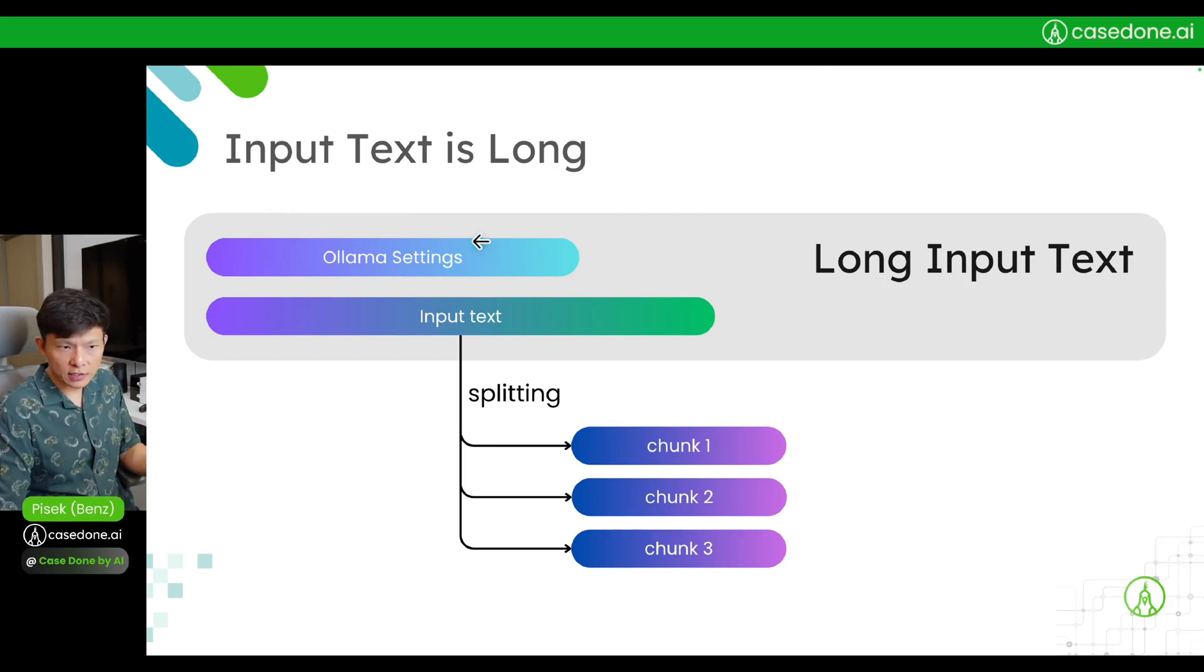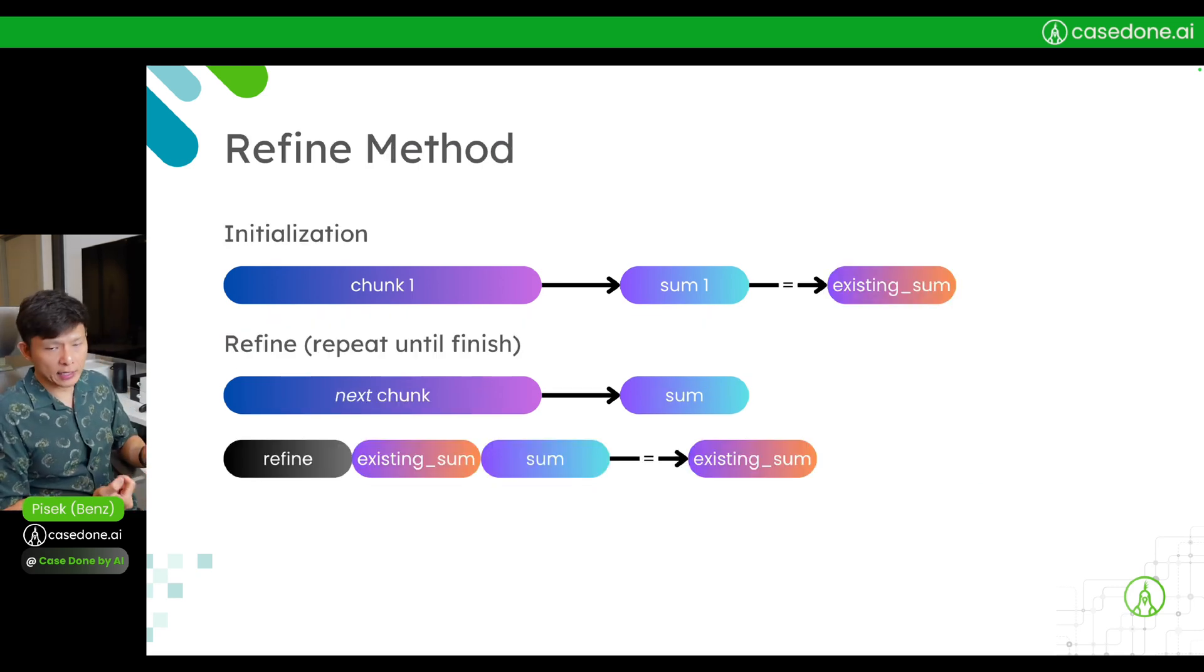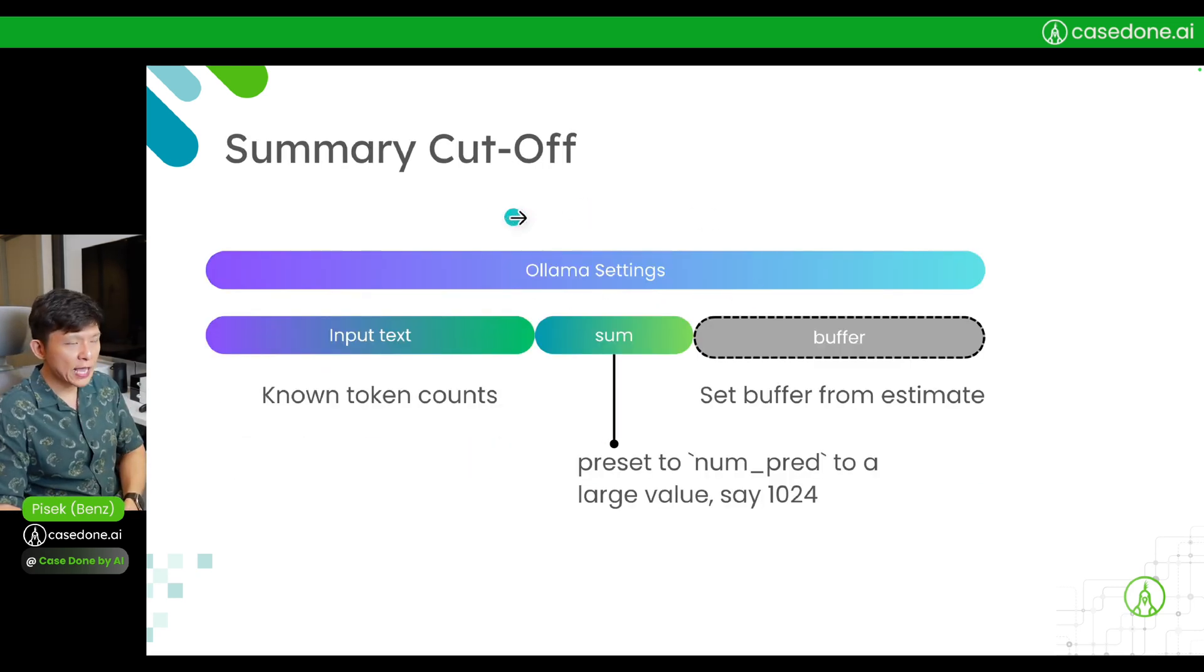The challenge of input taking too long can be addressed with two approaches. The first one is the map-reduce method. The second method is the refine method. You need to be careful of the context length that we are dealing with.